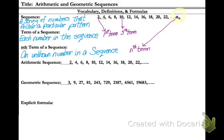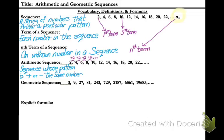Arithmetic sequences are sequences whose pattern is plus or minus the same number. In this particular sequence, we are adding 2 each time, and this is linear.